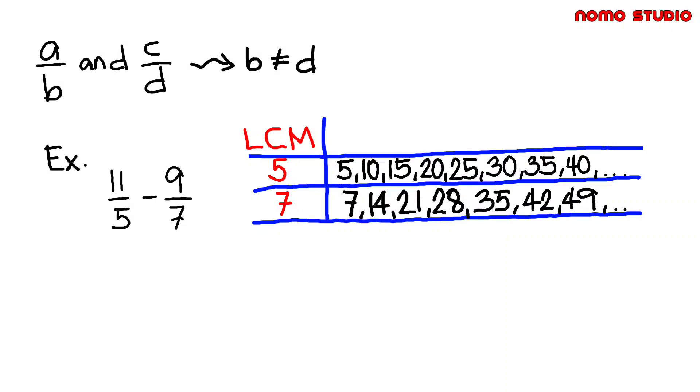So the LCD is 35. 35 divided by 5 is 7, then times 11, and that is equal to 77.